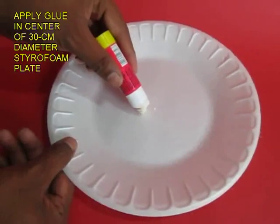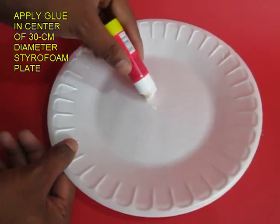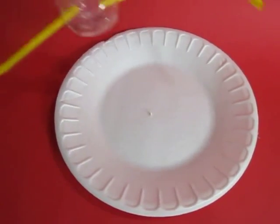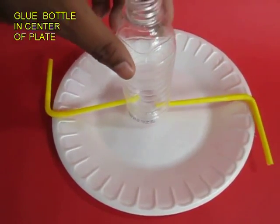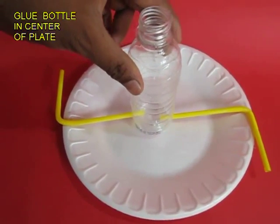Note that the straws are in opposite directions. Now apply some stick glue in the center of the styrofoam plate and stick the bottle to the styrofoam plate.